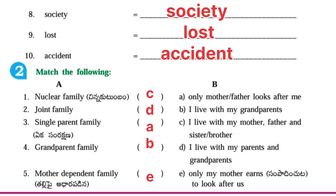Second one — Match the following. Nuclear family: I live with my mother, father, and sister or brother. Second one, joint family: I live with my parents and grandparents.